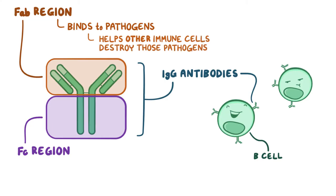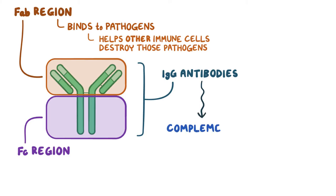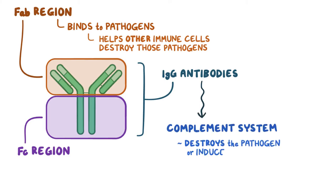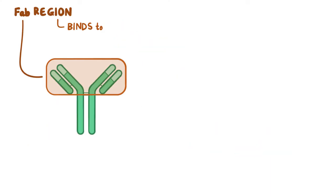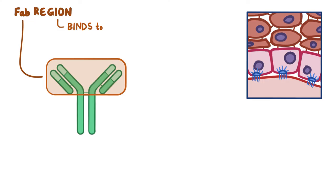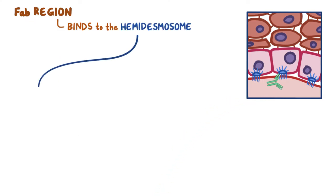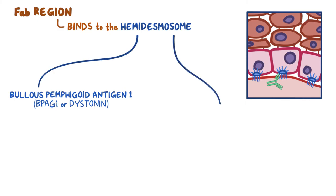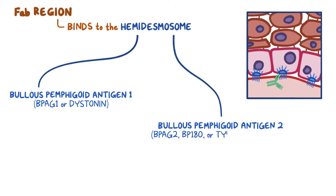The antibodies can also activate a part of the immune system called the complement system, which destroys the pathogen or induces inflammation. In bullous pemphigoid, the FAB region of IgG antibodies binds to proteins that make up the hemidesmosome. One protein is called bullous pemphigoid antigen 1, or BPAG1 — also called distanin — and another is called bullous pemphigoid antigen 2, or BPAG2, also called BP180 or type 17 collagen.